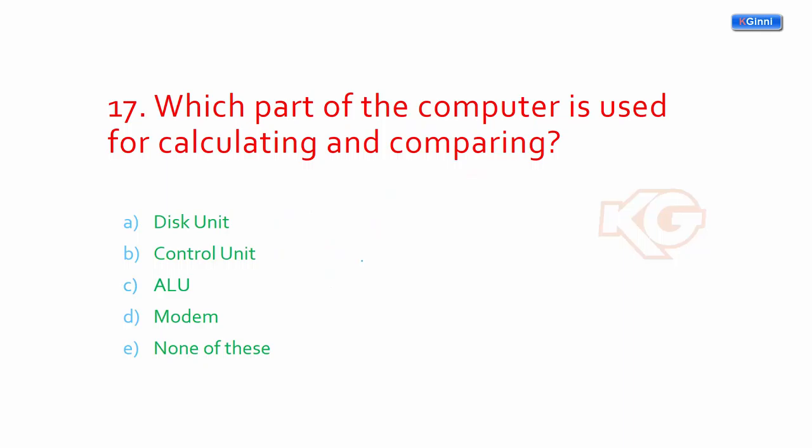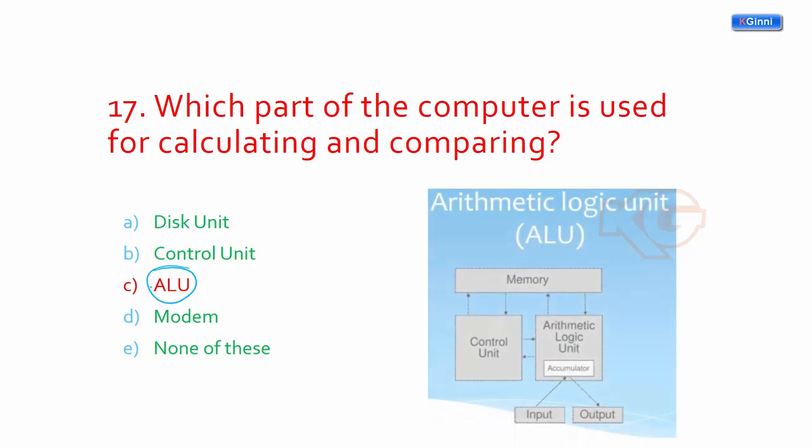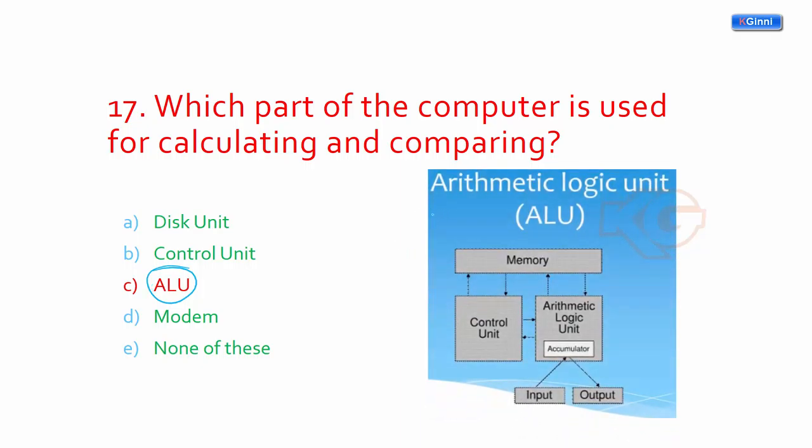Which part of the computer is used for calculating and comparing? We already discussed this part in earlier questions. It should be option C: ALU, or the arithmetic logic unit. In a different pictorial way, you can remember now it has a memory on top, control unit, the arithmetic logic unit, the accumulator. It takes inputs as well as provides output to the computer. It's called the brain which does all the operations.